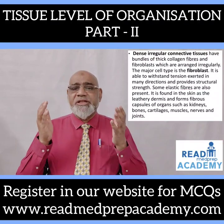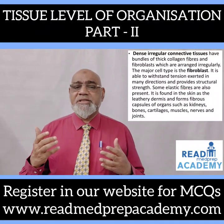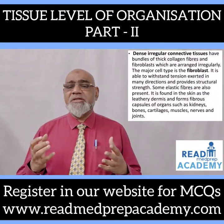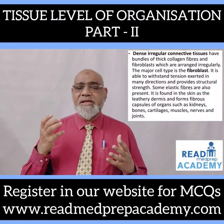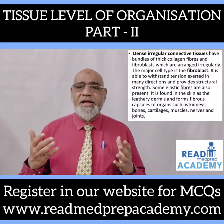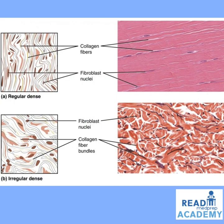Dense irregular connective tissues have bundles of thick collagen fibers and fibroblasts arranged irregularly. The major cell type is fibroblasts. It withstands tension in many directions and provides structural strength; some elastic fibers are also present. It is found in the skin as the leathery dermis and forms fibrous capsules of organs such as kidneys, bones, cartilages, muscles, nerves, and joints. The image shows regular dense connective tissue with collagen fibers in a regular fashion and fibroblast nuclei, and below it the irregular dense connective tissue.